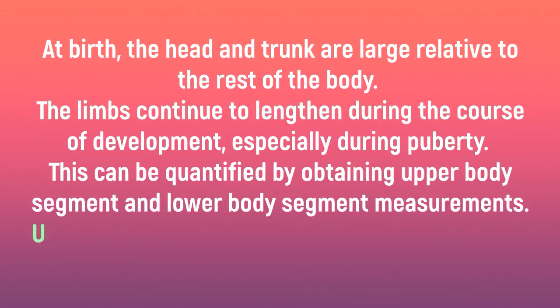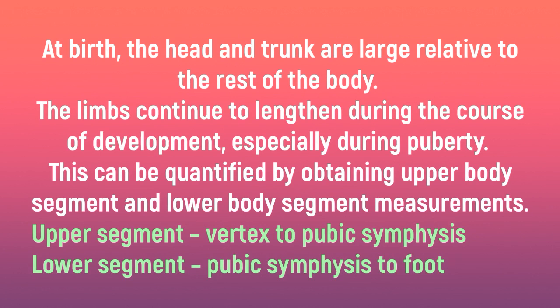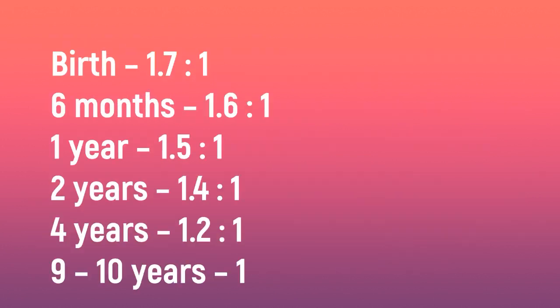At birth, the head and trunk are large relative to the rest of the body. The limbs continue to lengthen during development, especially during puberty. This is quantified by upper body segment (vertex to pubic symphysis) and lower body segment (pubic symphysis to foot) measurements. Upper to lower segment ratios: birth 1.7:1, 6 months 1.6:1, 1 year 1.5:1, 2 years 1.4:1, 4 years 1.2:1, 9–10 years 1:1.